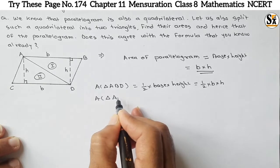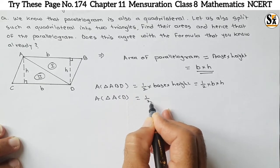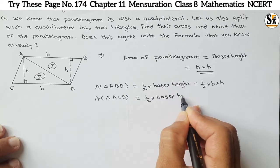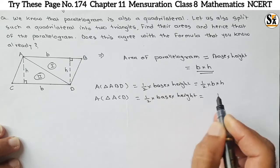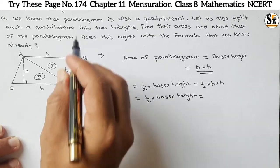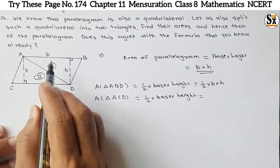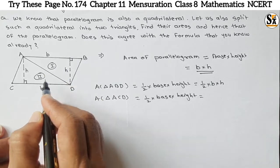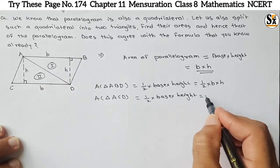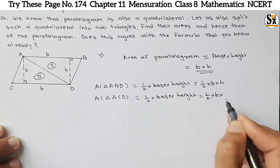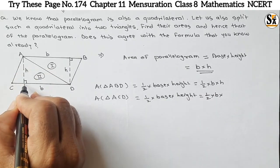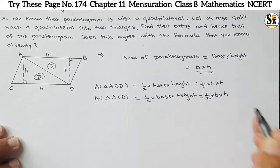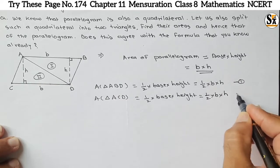Now the area of the second triangle ACD. That will be equal to one-half into base into height. Here the base is CD, because this is a parallelogram and we know that opposite sides are equal — AB is opposite to CD, so both must be equal to B. Height here is the perpendicular distance from the base to the opposite vertex, which is H. So area of ACD is one-half into B into H.